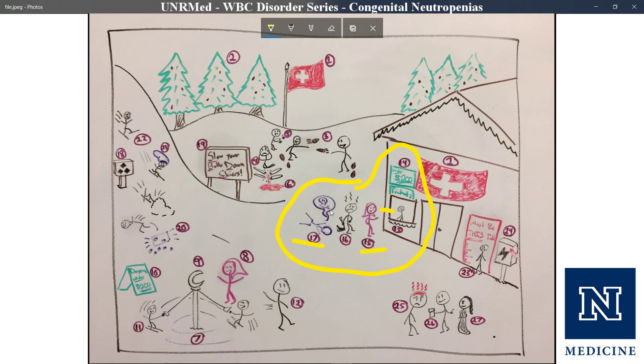There's also a third mutation called G6PC3 — it's not specifically symbolized in the sketch since it was hard to illustrate, but remember there are three people in line: three mutations. The main ones to focus on are ELA2 and possibly HAX1. Lastly, a person face-down in the snow and dead represents that Kostmann Syndrome is a severe disease — probably the most severe of these four congenital neutropenias.